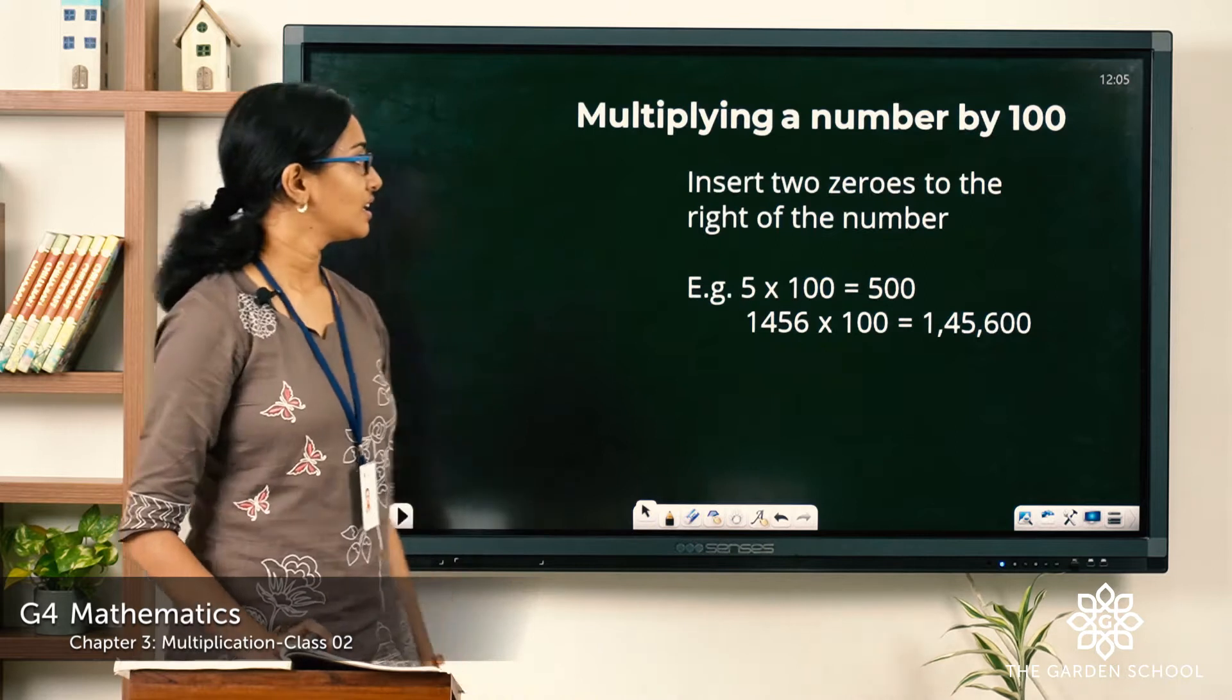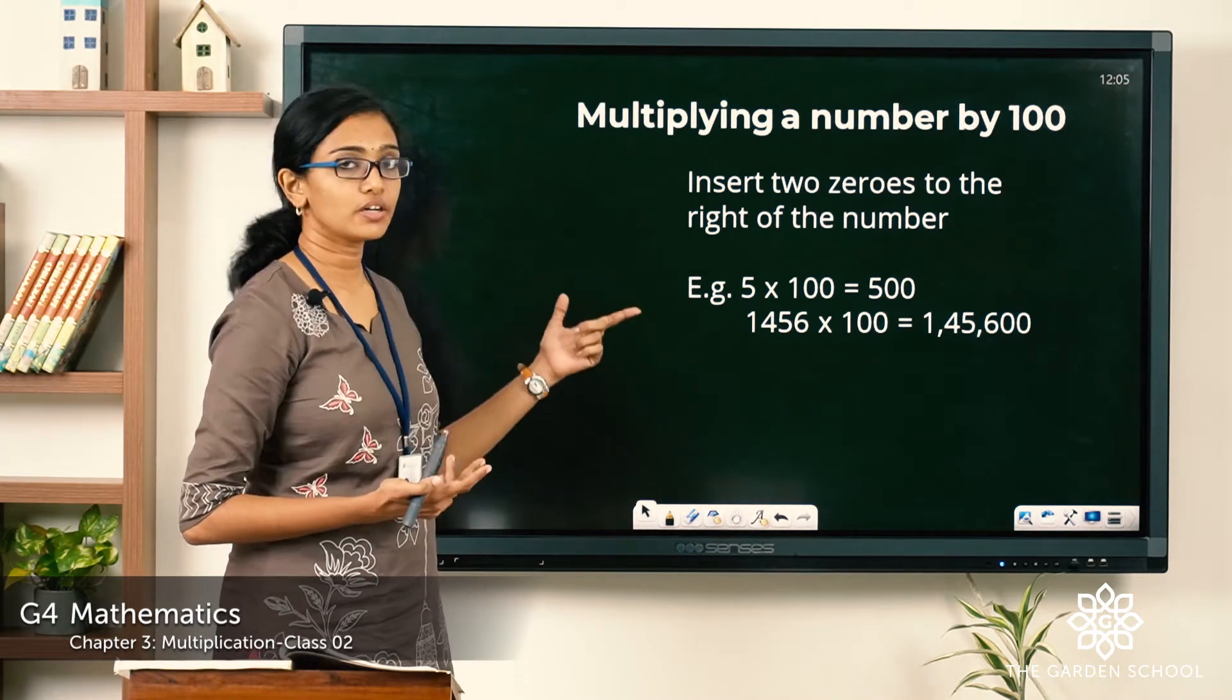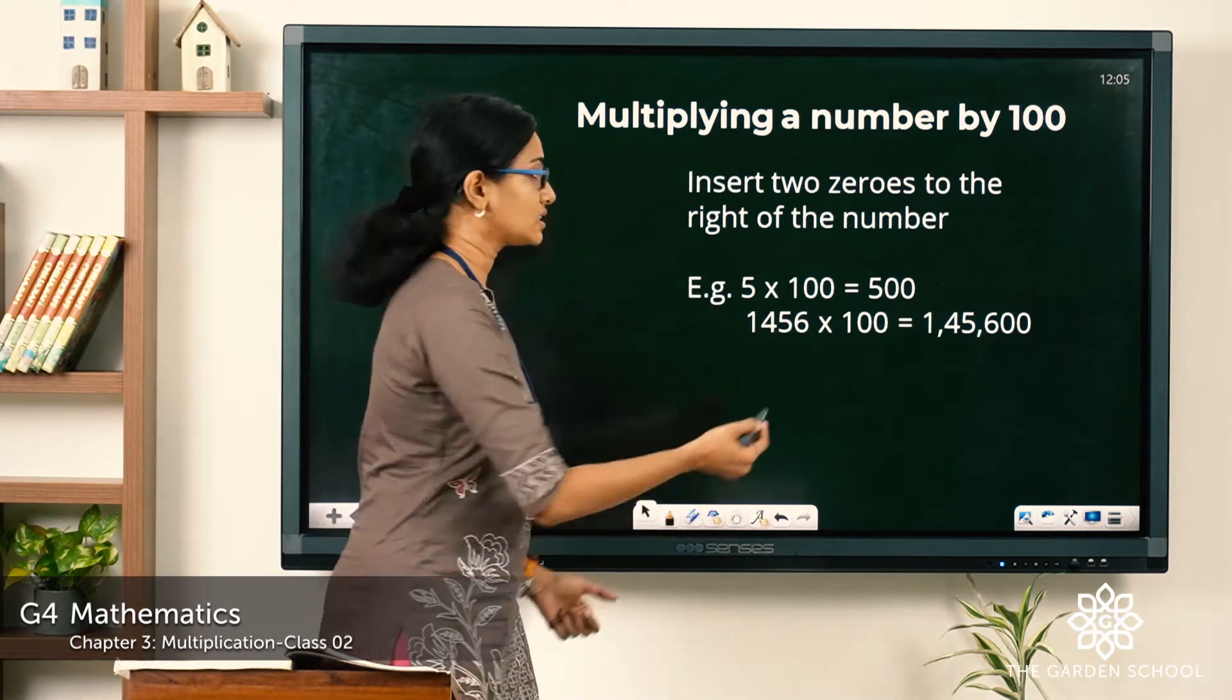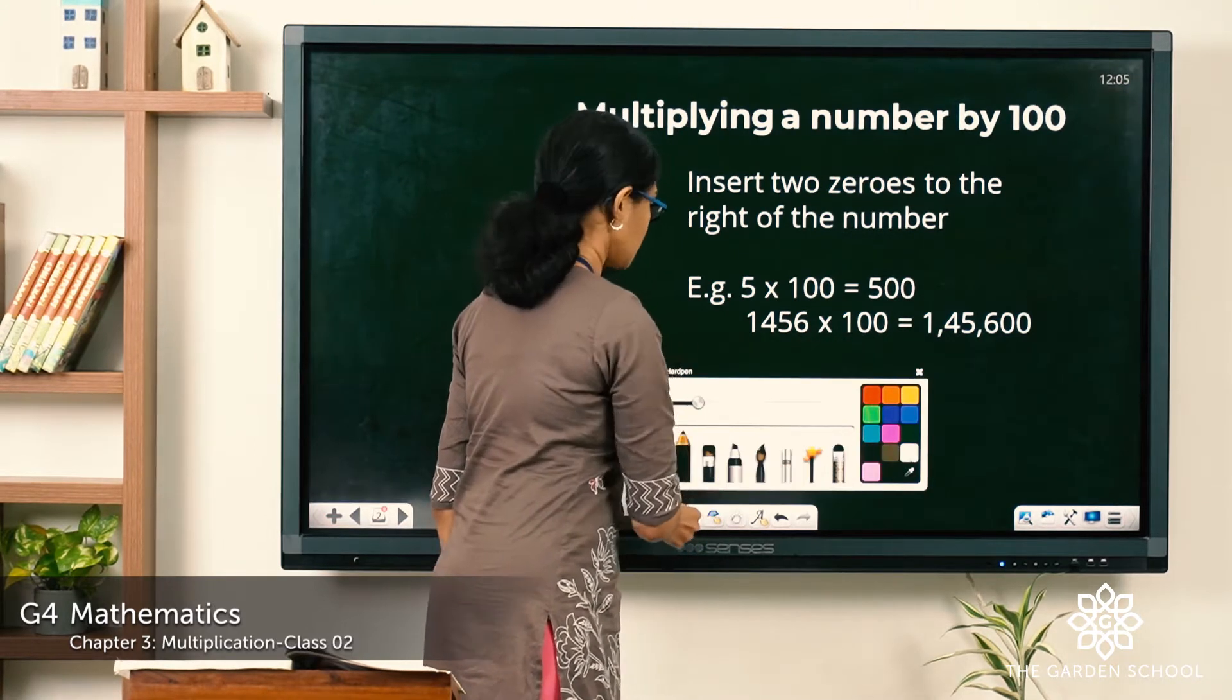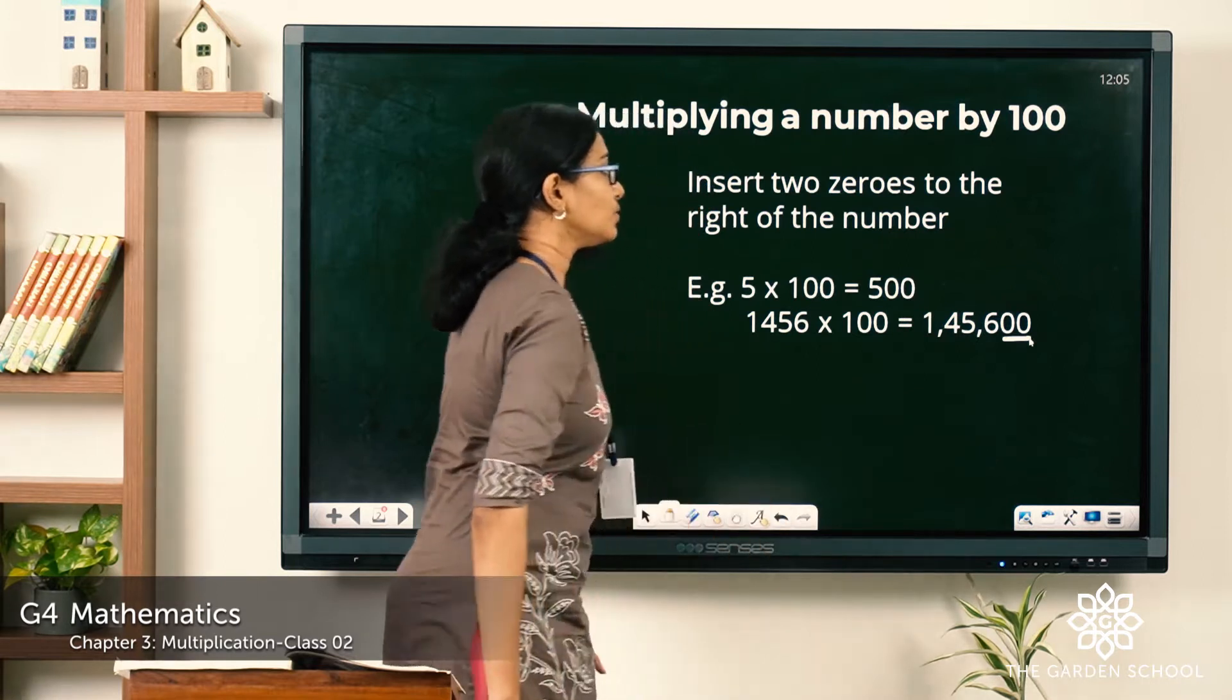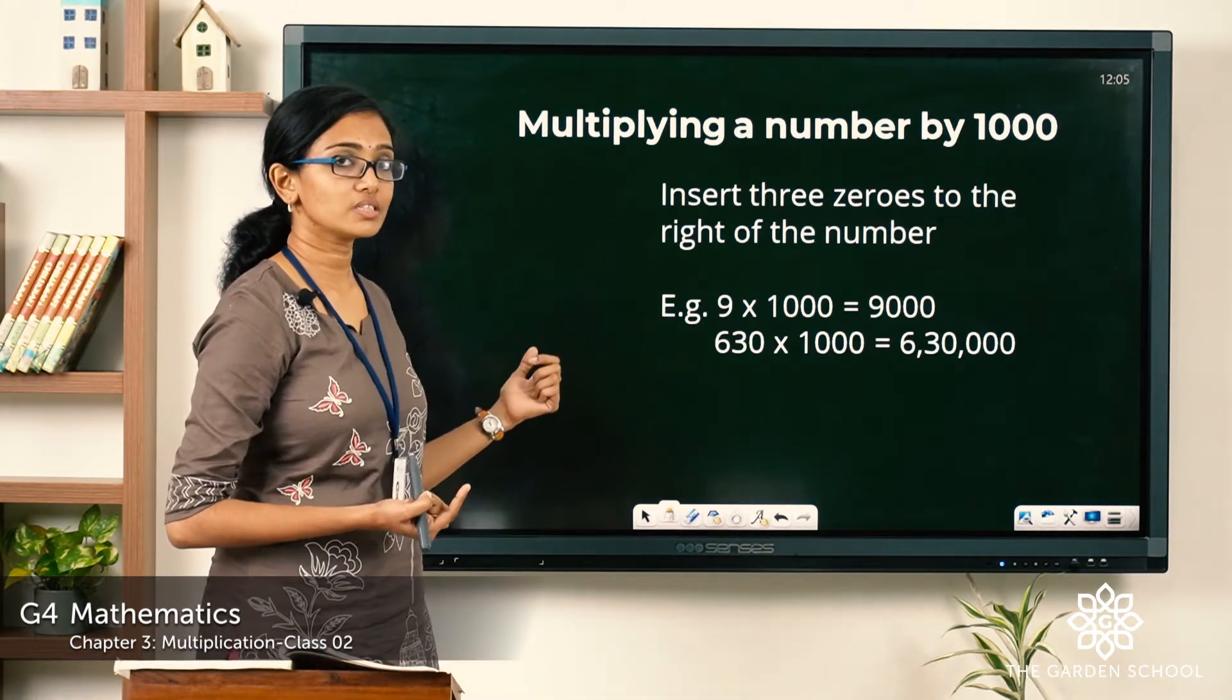Now look at this example: 5 into 100. To multiply any number easily by 100, just insert two zeros to the right of the given number. So here, 5 into 100, inserting two zeros to the right of it gives you 500. Now the second example, 1456 into 100, inserting two zeros to the right will give you the product 1,45,600. When you multiply with 100 you insert two zeros.